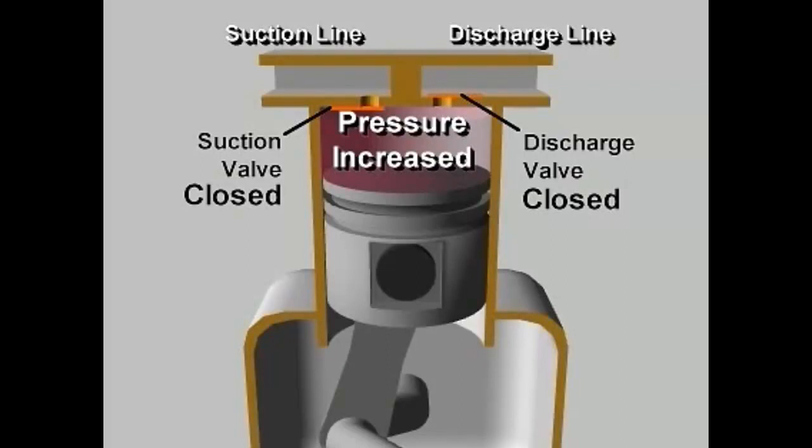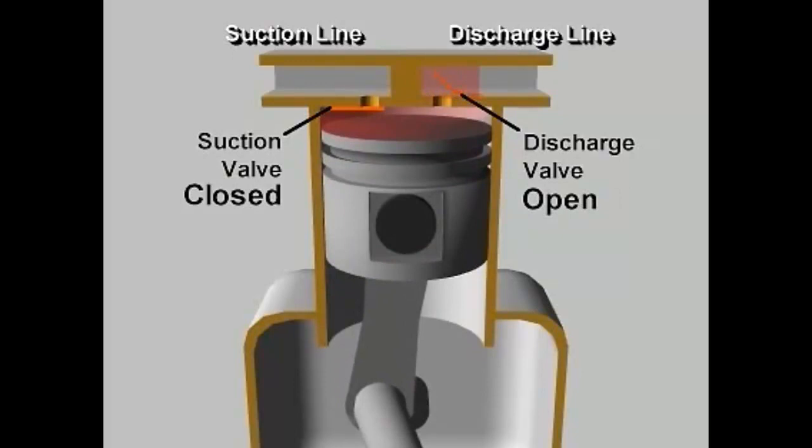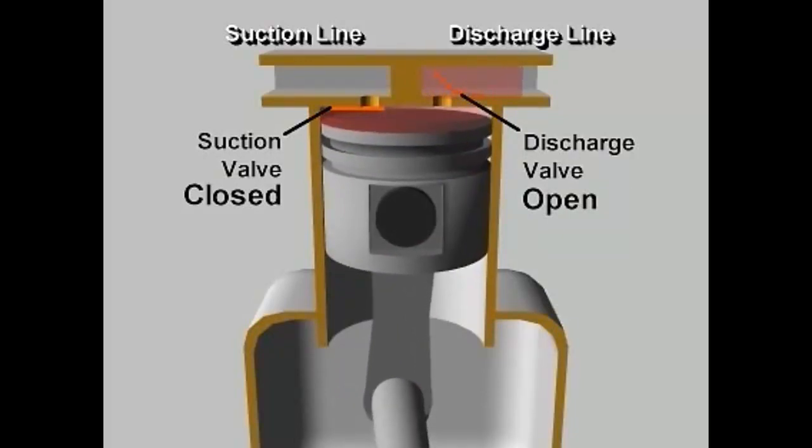When the pressure in the cylinder exceeds the high side pressure in the discharge line, the pressure difference pushes the discharge valve open, letting the compressed vapor flow out of the cylinder. This continues until the piston reaches the top of its stroke, and most of the compressed vapor has been expelled into the discharge line.